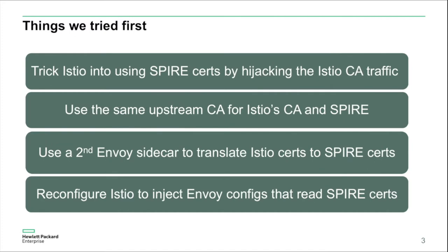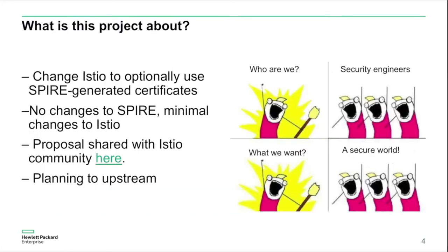So what we really needed after trying all these approaches was a modified version of Istio that knows how to talk to Spire itself and get Spire certificates. Our goal for this project is to modify Istio itself to optionally use Spire certificates instead of Istio certificates. There are no changes to Spire as part of this project, and there are some minimal changes to Istio in order to talk to Spire. We started by developing a proposal and sharing it with the Istio community, gathering feedback, and once this is working 100% and tested and documented, we are planning to work with the Istio community to get it into upstream Istio.